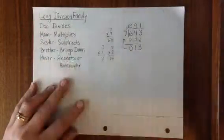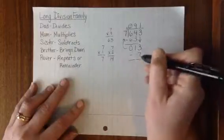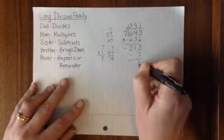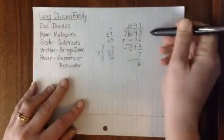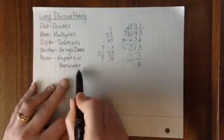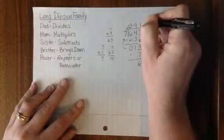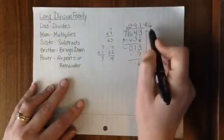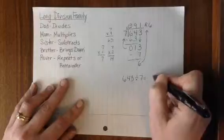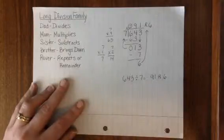And Mom says, Let me multiply and double-check. 1 times 7 is 7. Sister subtracts. 13 take away 7 is 6. That takes us to Brother. However, there's no number here for Brother to bring down. Which tells us that Rover has a remainder to put in the answer. So Rover takes this remainder of 6 and puts it up as a remainder of 6 in our quotient. Therefore, 643 divided by 7 equals 91 remainder of 6. 91 whole pieces with 6 pieces left over.